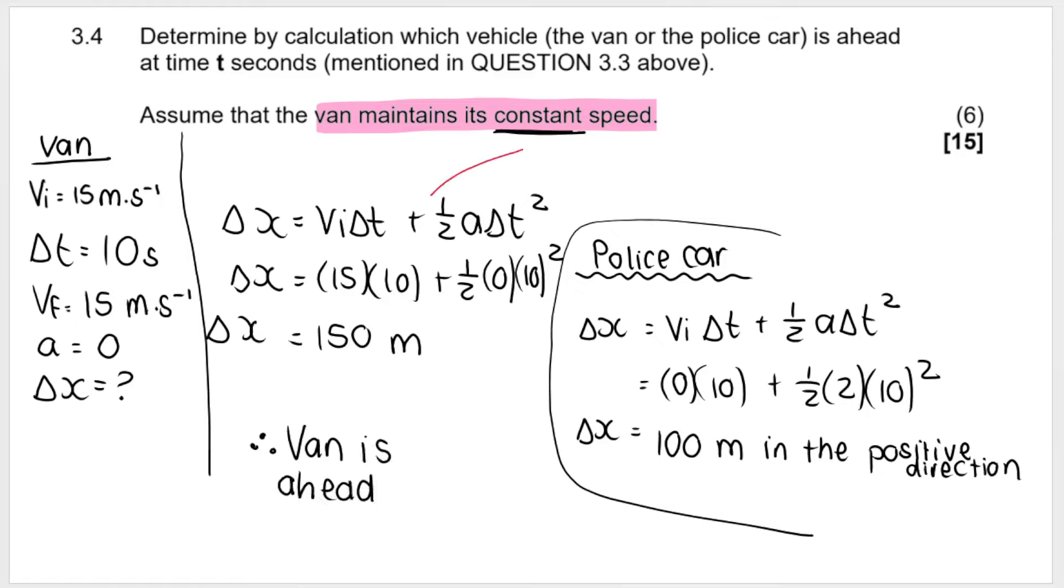So where do you get your marks? You get formula mark, substitution, substitution. That is one, two, three, four, five, and conclusion, six.